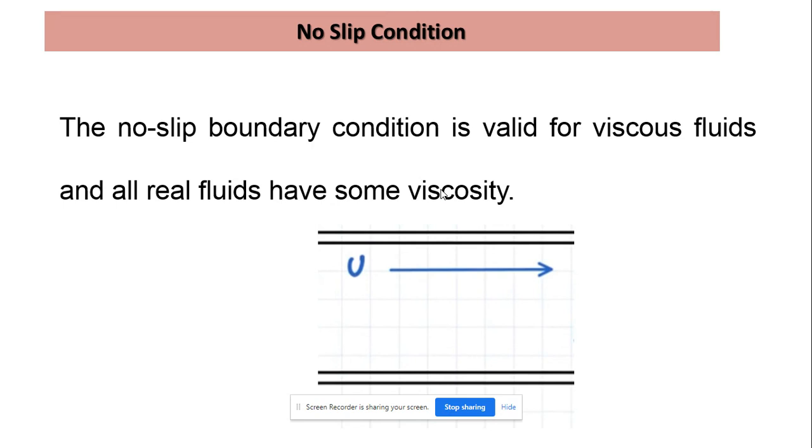If there is a pipe and flow is taking place, then at the solid boundaries—the pipe boundary or pipe surface—since the pipe is not moving, the velocity will be zero. All the fluid particles next to the pipe surface will be stationary.